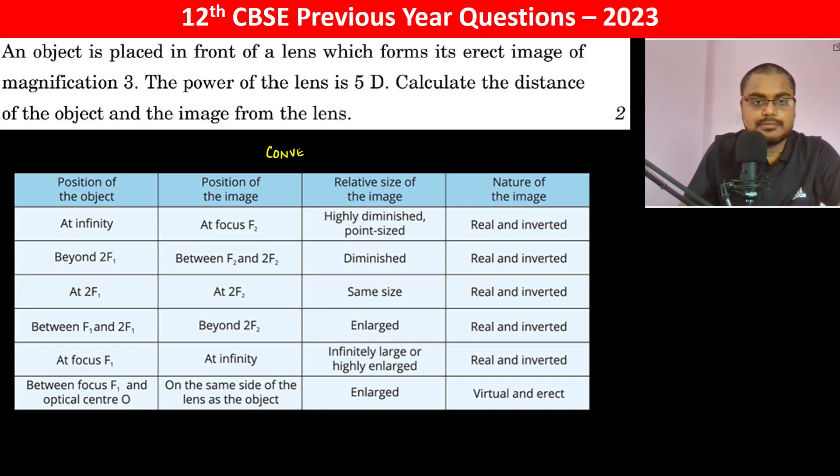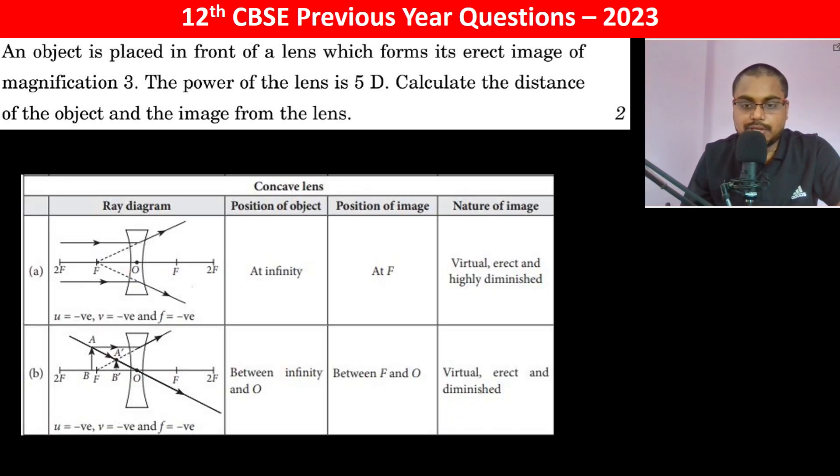This is a convex lens. The convex lens gives a virtual, erect, and enlarged image with magnification. Whereas a concave lens gives a virtual and diminished image, therefore it is not a concave lens, it is a convex lens.